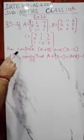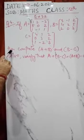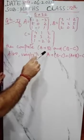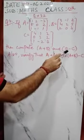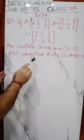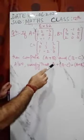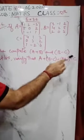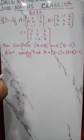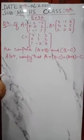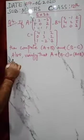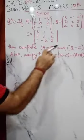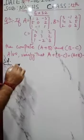What have you been asked to do? Compute the value of A plus B and B minus C. Also you have to verify that A plus B minus C equals A plus B minus C. So let us first compute the value of A plus B and B minus C.